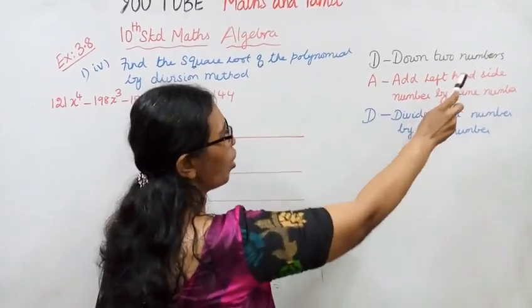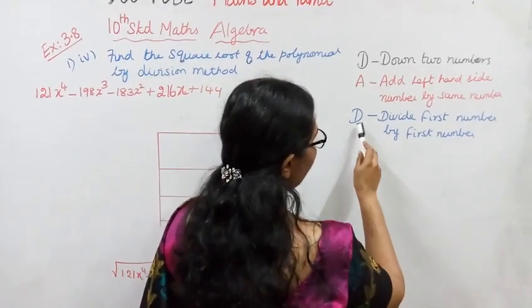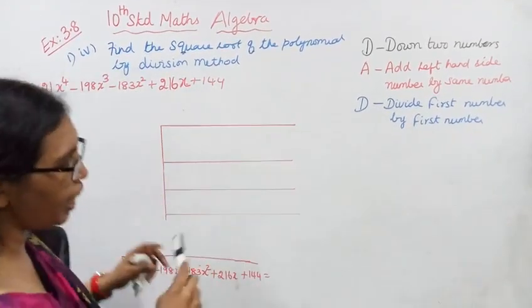D is down two numbers. A is add left hand side number by same number. D is divide first number by first number. This is very easy.